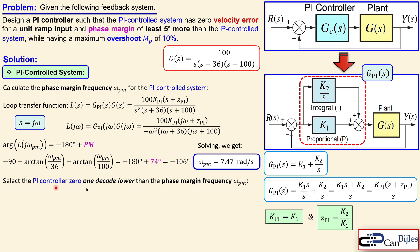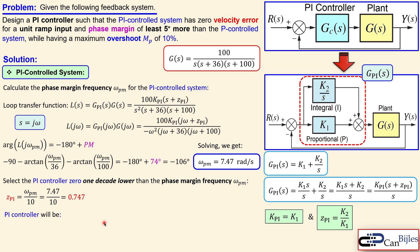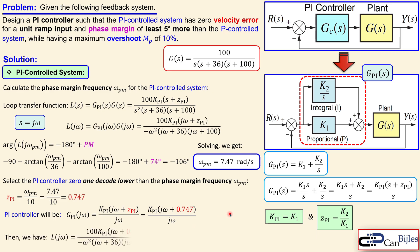The next step is a rule of thumb: we select the controller zero z_PI one decade lower than the phase margin frequency we just calculated. That means z_PI = 7.47 / 10 = 0.747. You can also round down to 0.7, which is slightly less than a factor of ten — that is also possible. The PI controller in the j-omega domain is now given by this expression with our z_PI value.